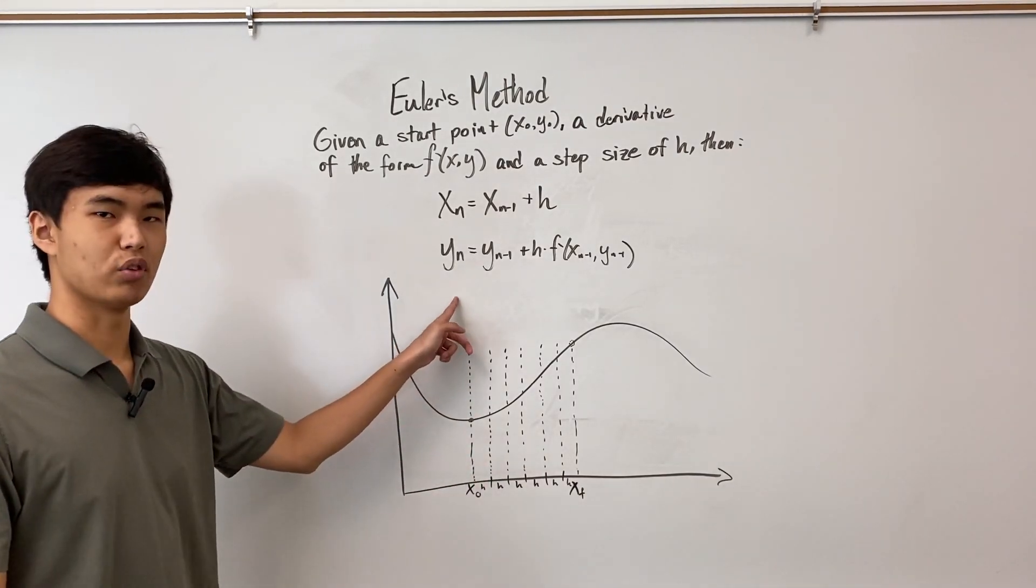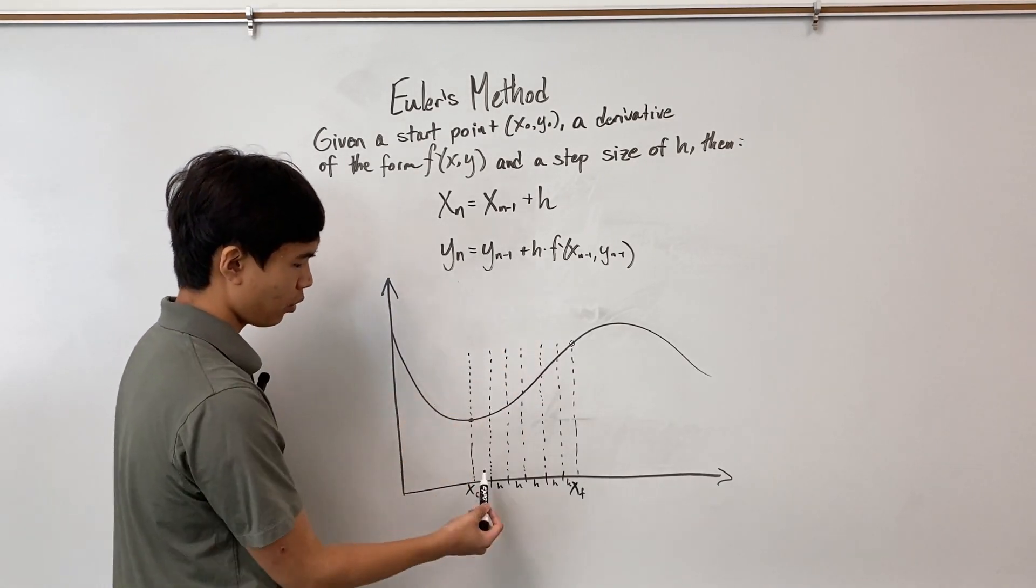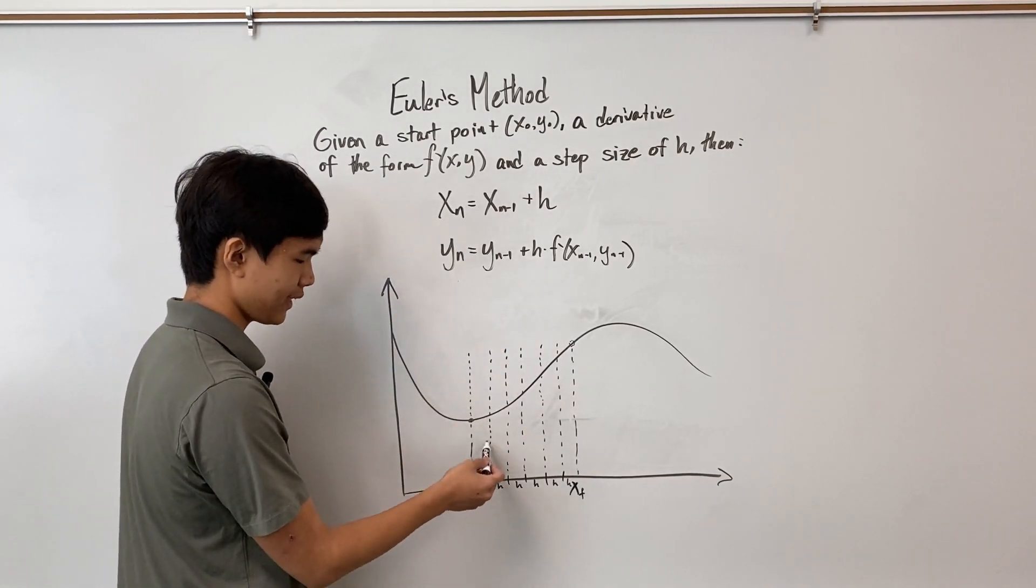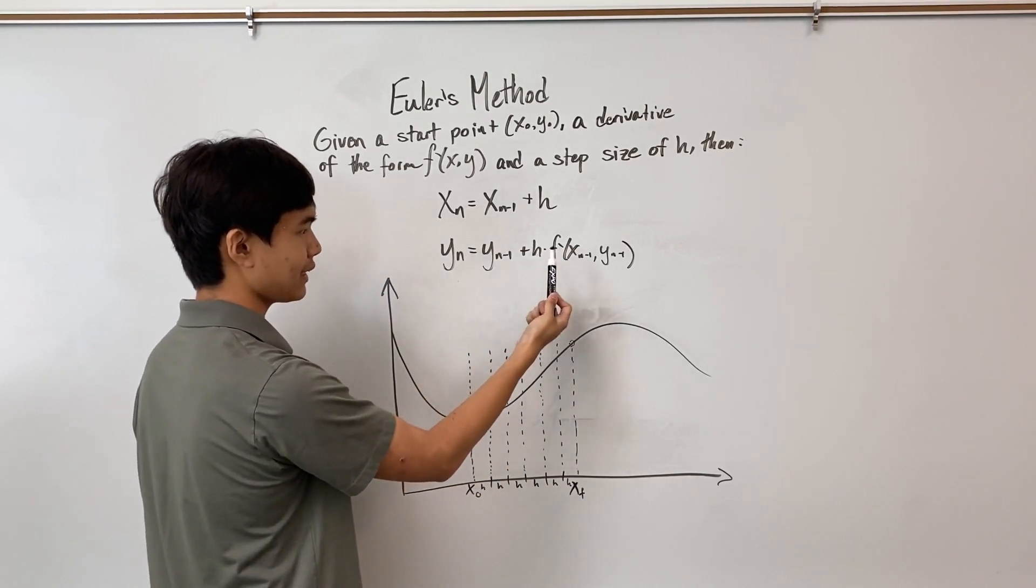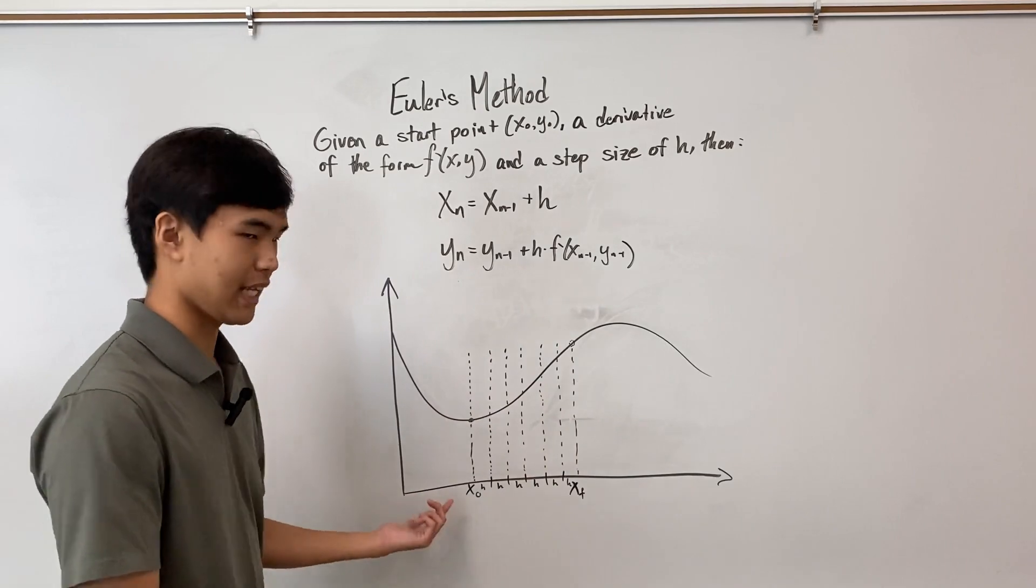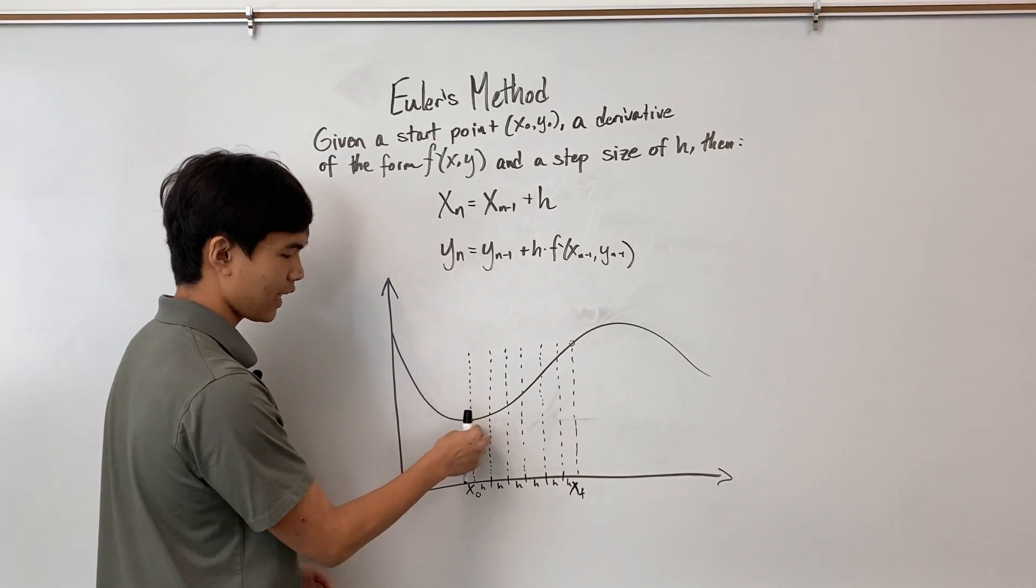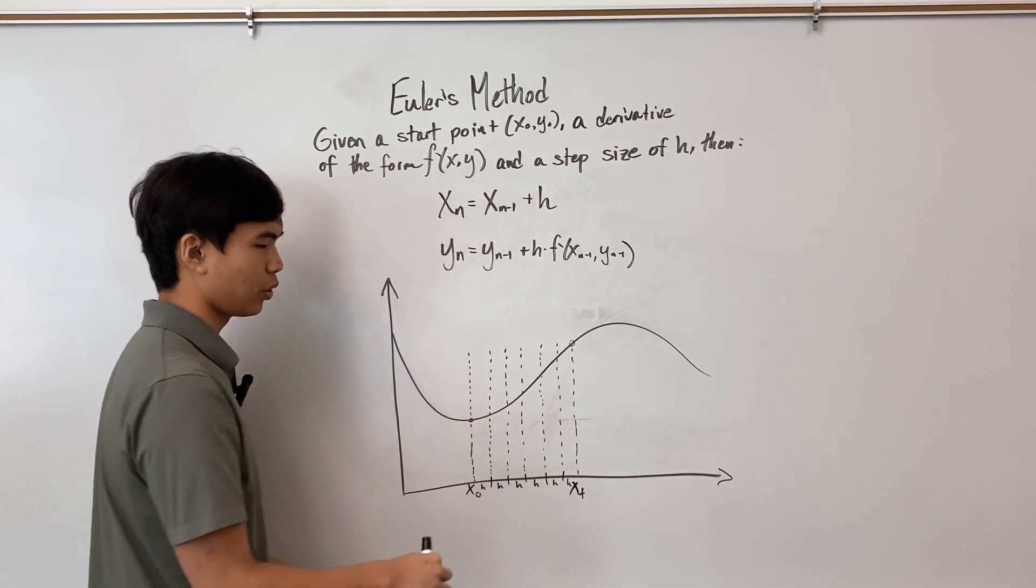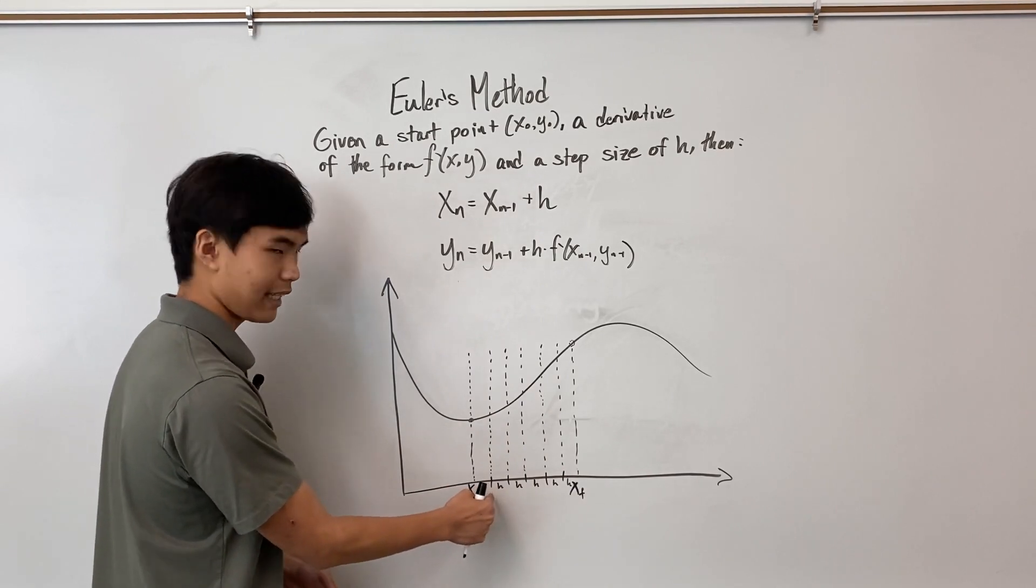So this is where the y rule comes in. This says that the next y, or the y associated with this x value, is the last y plus the step size times the derivative at the last point. What that means is we're taking the derivative at the last point, and we're writing the tangent line until we get to this x value.